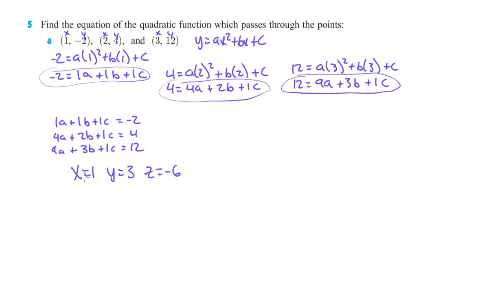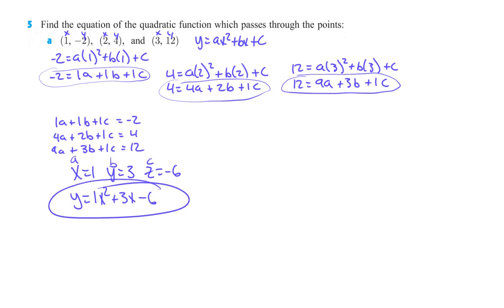What that means for us: x is actually A, y is actually B, and z is actually C. So A equals 1, B equals 3, C equals negative 6. Our equation is y equals 1x² plus 3x minus 6, and that's our equation for problem 5.